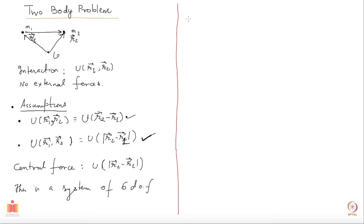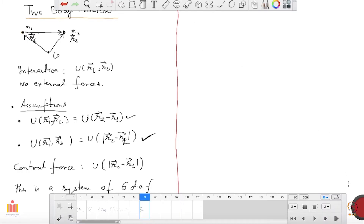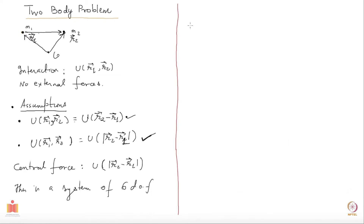What is the Lagrangian of this system? It is easy to write. It is just the kinetic energy minus the potential energy and we have already written down the form of potential energy. So the Lagrangian L is half m1 r1-dot squared plus half m2 r2-dot squared minus the potential energy u of the modulus of r2 minus r1 — it cares only about the length.